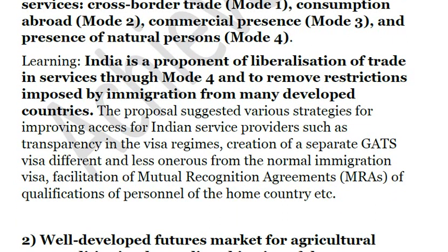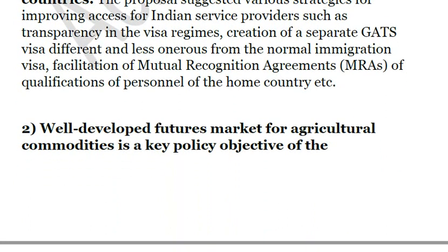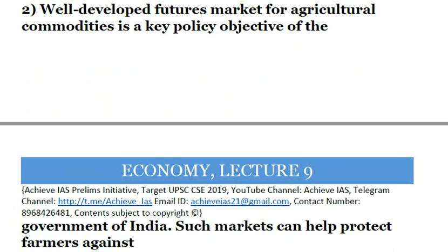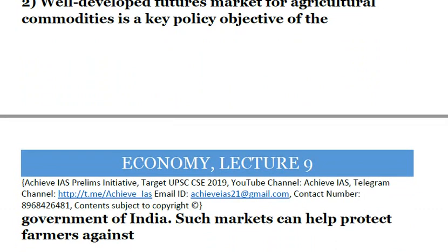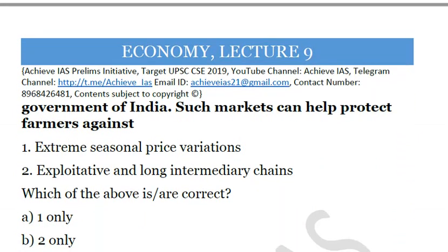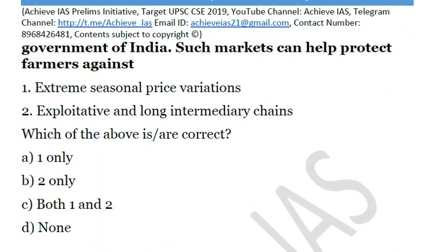Let's move on to the second question. A well-developed futures market for agricultural commodities is a key policy objective of the Government of India. Such markets can help protect farmers against: 1. extreme seasonal price variations, 2. exploitative and long intermediary chains. Both statements are correct, so the solution is C.